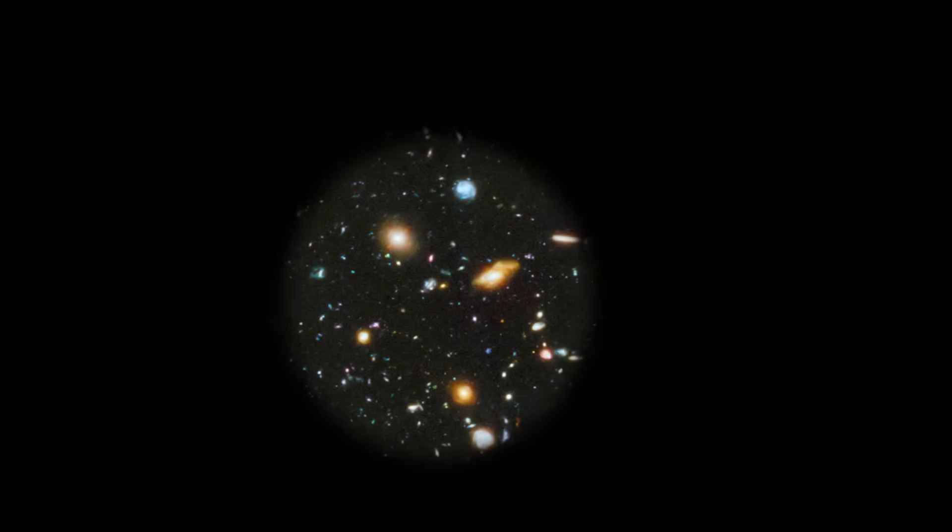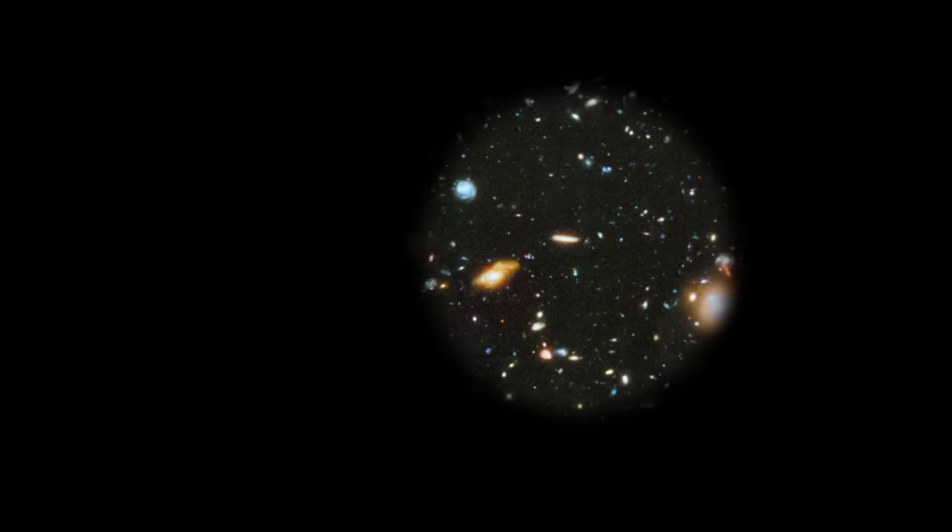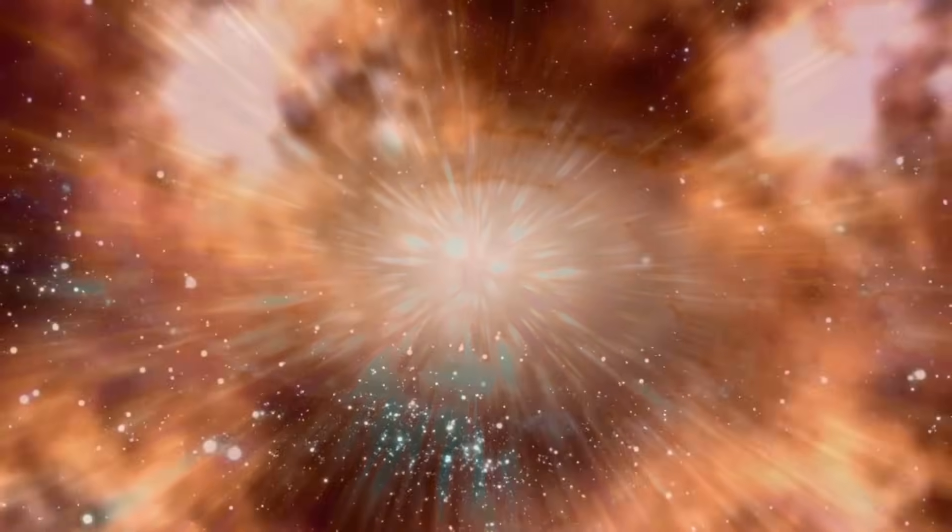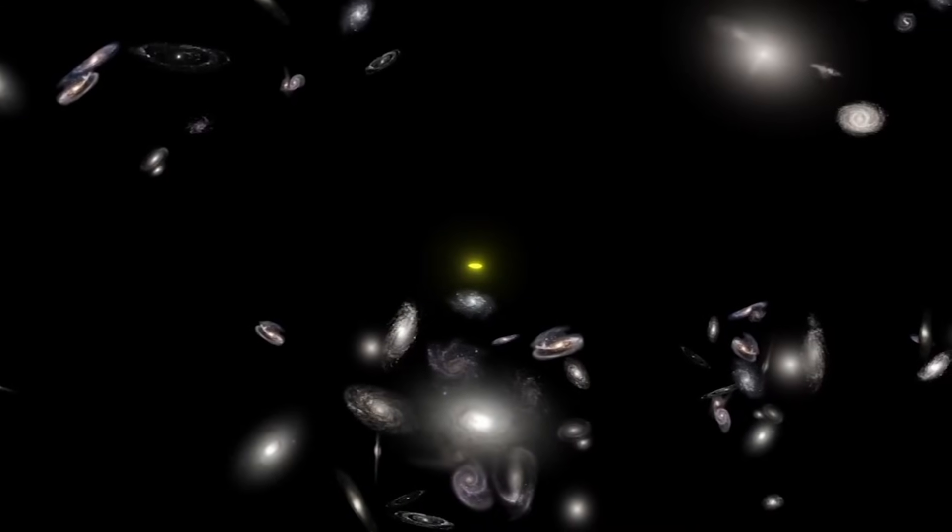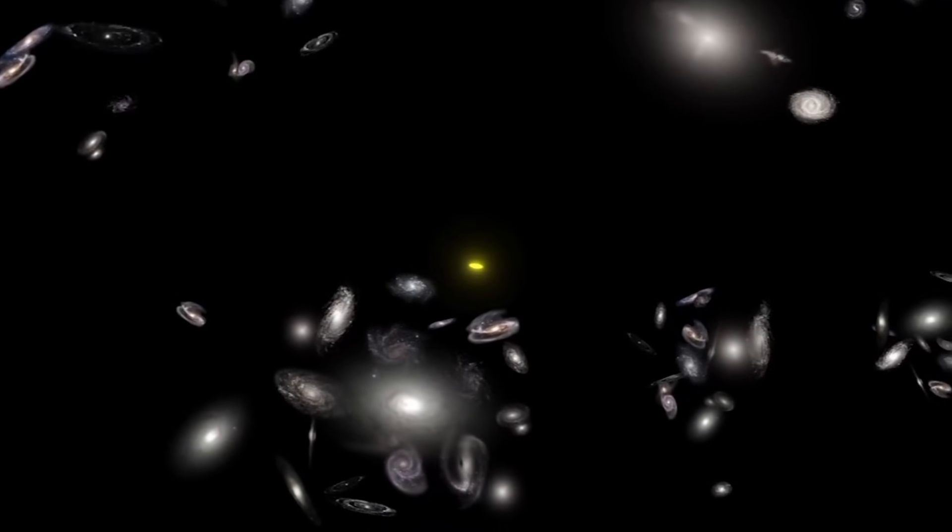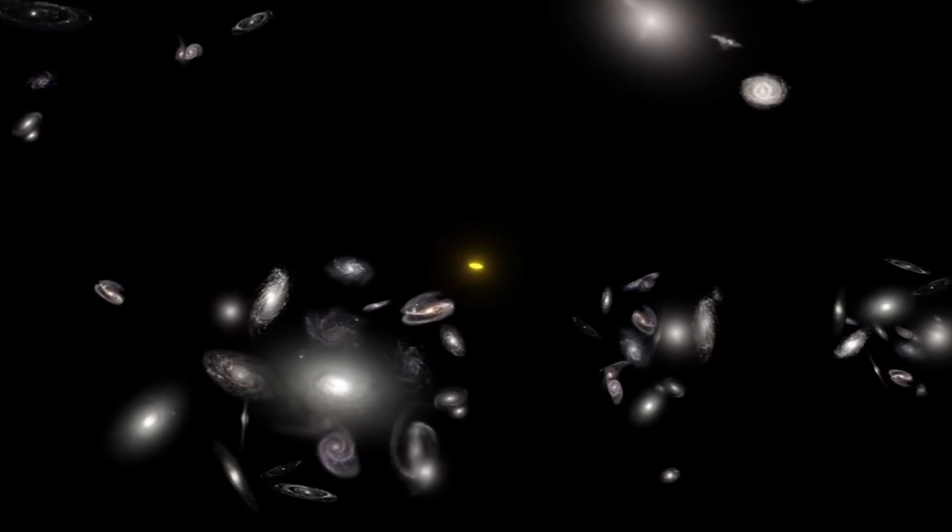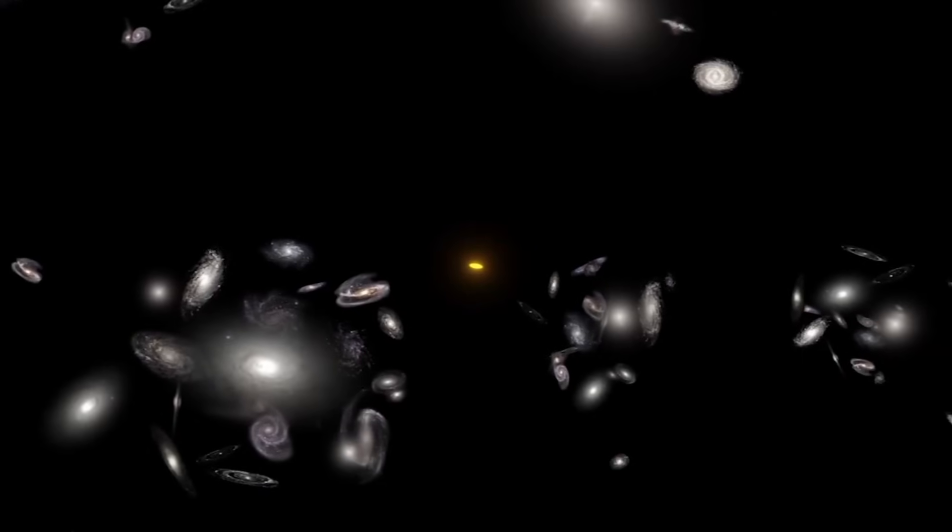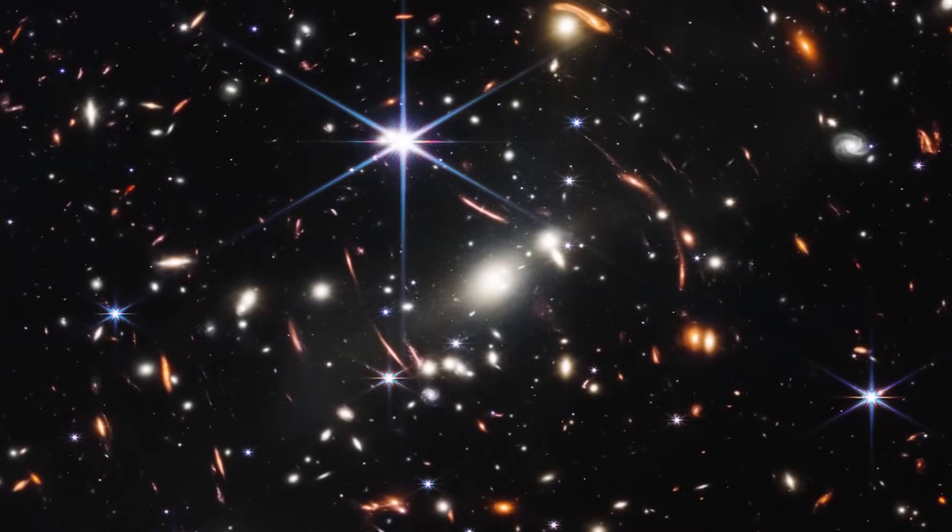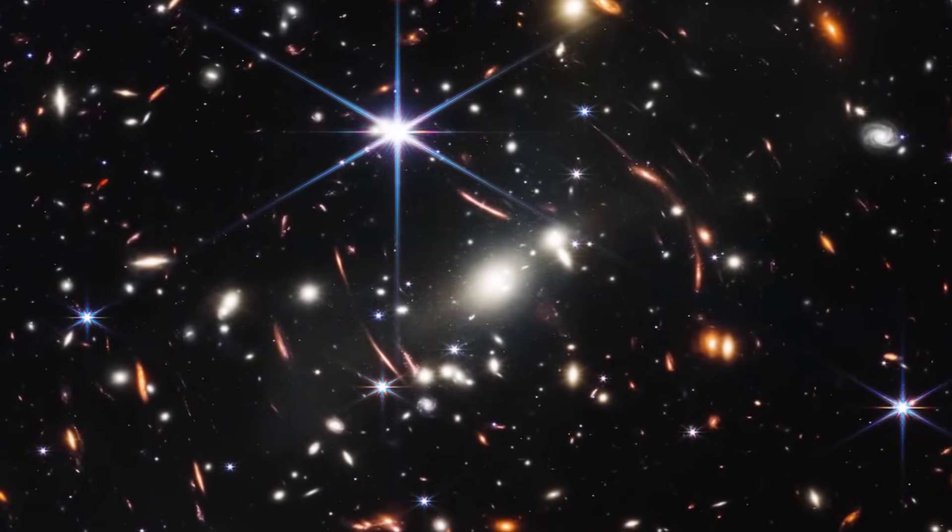The striking images captured by the James Webb telescope have challenged our understanding of the origins of the universe. Specifically, these images directly contradict the Big Bang hypothesis, which has long been considered an unquestioned truth by most cosmology theorists. The galaxies captured in these images appear to be too small, smooth, old, and numerous compared to the predictions of the Big Bang hypothesis.